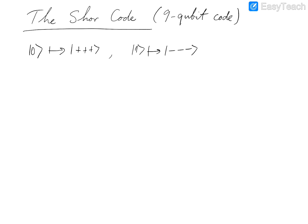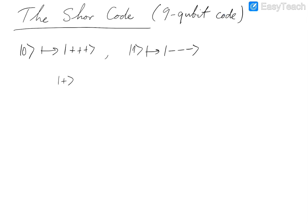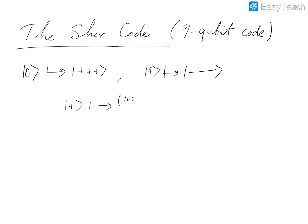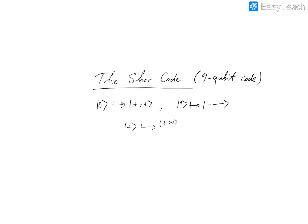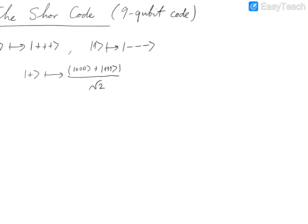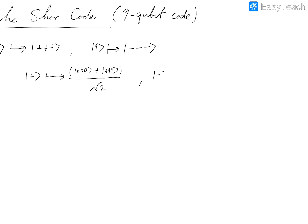Then we encode each of |+⟩ and |−⟩ using the three-qubit bit flip code. So each |+⟩ will be mapped to the three-qubit state (|000⟩ + |111⟩) with normalization factor 1 over square root 2, and |−⟩ will be mapped to (|000⟩ − |111⟩). In the end we get a 9-qubit code.